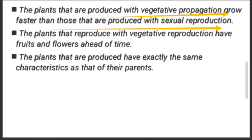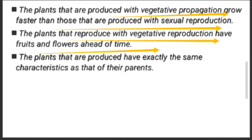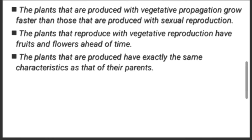The second advantage is: plants that reproduce through vegetative propagation have fruits and flowers ahead of time. Plants grown by vegetative reproduction produce their fruits and flowers earlier than expected. That is why vegetative propagation is considered a faster method of reproduction.